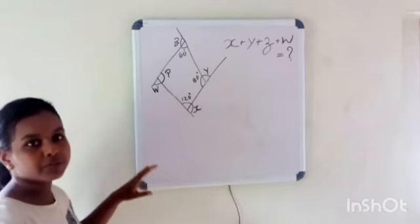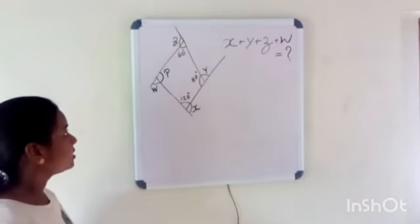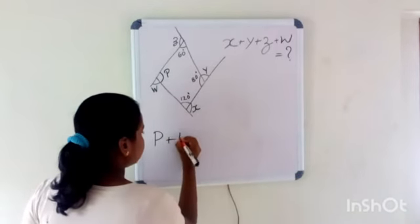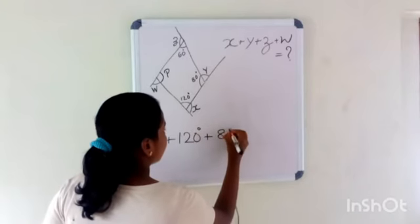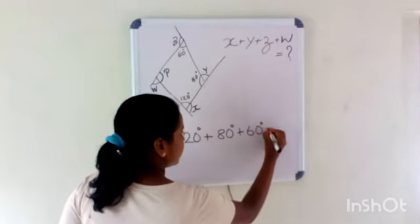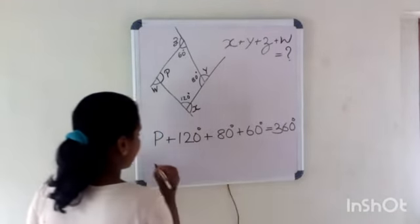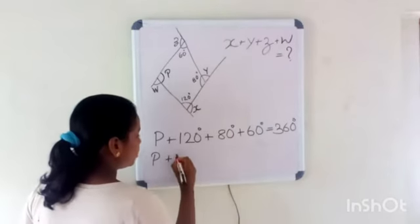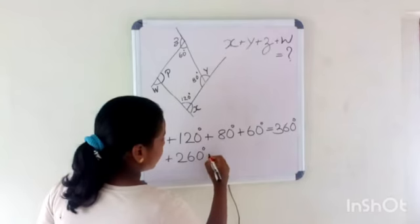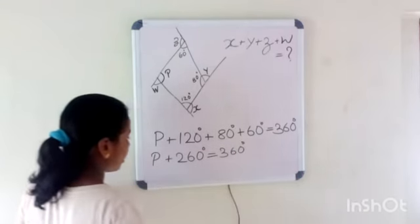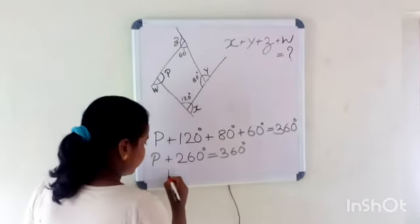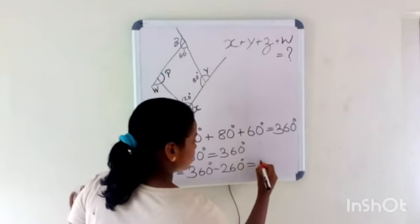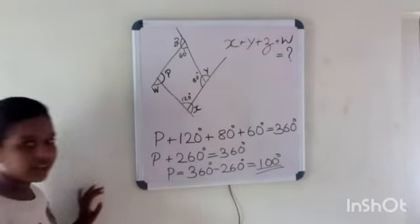We are going to find the measure of angle P using the property of a quadrilateral: the sum of all interior angles equals 360 degrees. So P plus 120 plus 80 plus 60 equals 360. That gives P plus 260 equals 360, so P equals 360 minus 260, which equals 100 degrees.